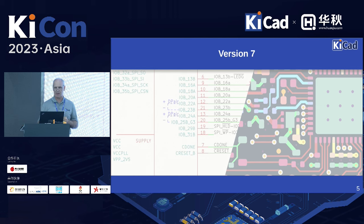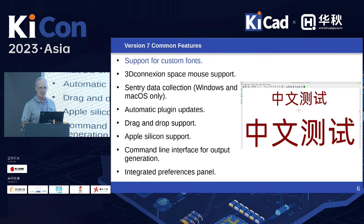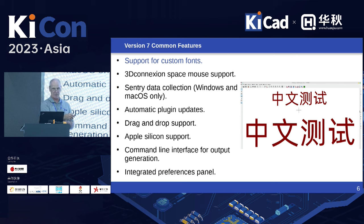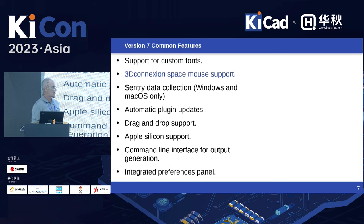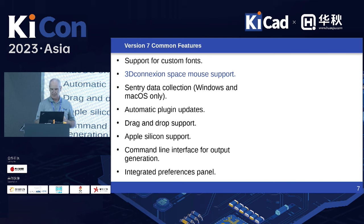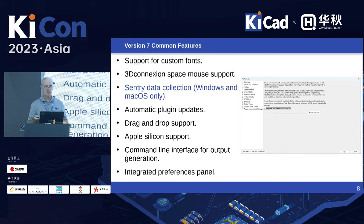I'm going to talk about version 7. Some of the features that happened in version 7: this was a big one especially for language support — you can now use any font in KiCad for anything: symbols, schematics, boards, footprints. For those of you who have the 3D Connection SpaceMouse, KiCad now supports those directly on Windows and macOS — I think the Linux driver hasn't been supported yet.